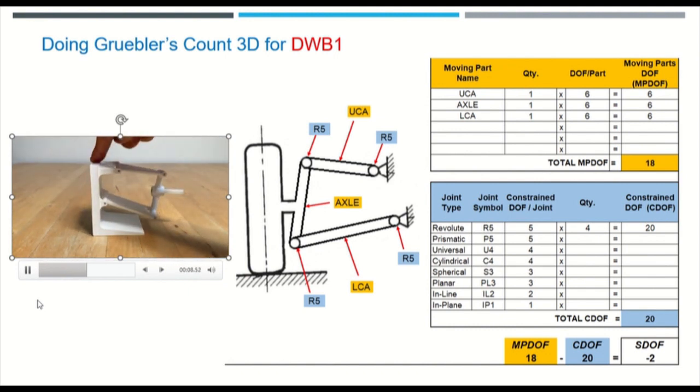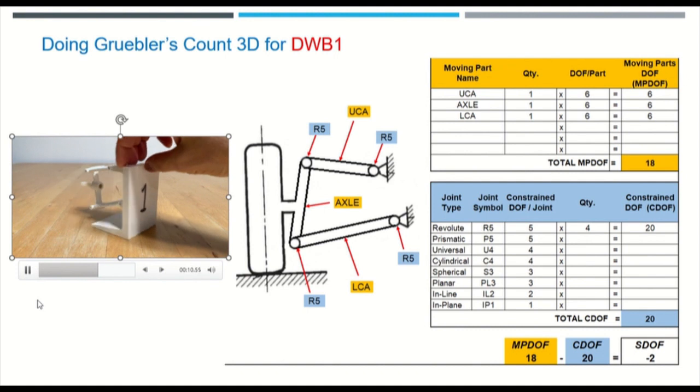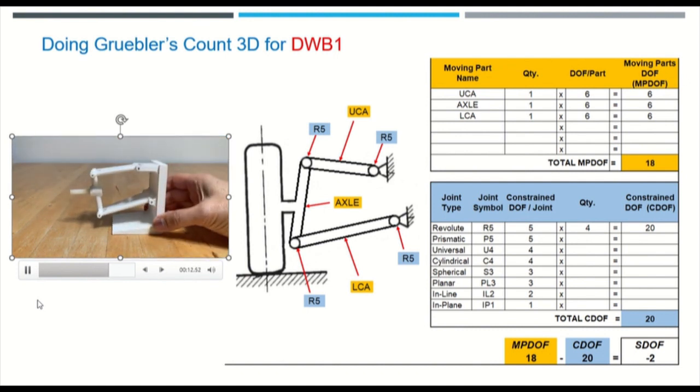But I made the spin axes on revolute joints not parallel on purpose, about 10 to 5 degrees off, to show that it's a lock situation here after you build it.